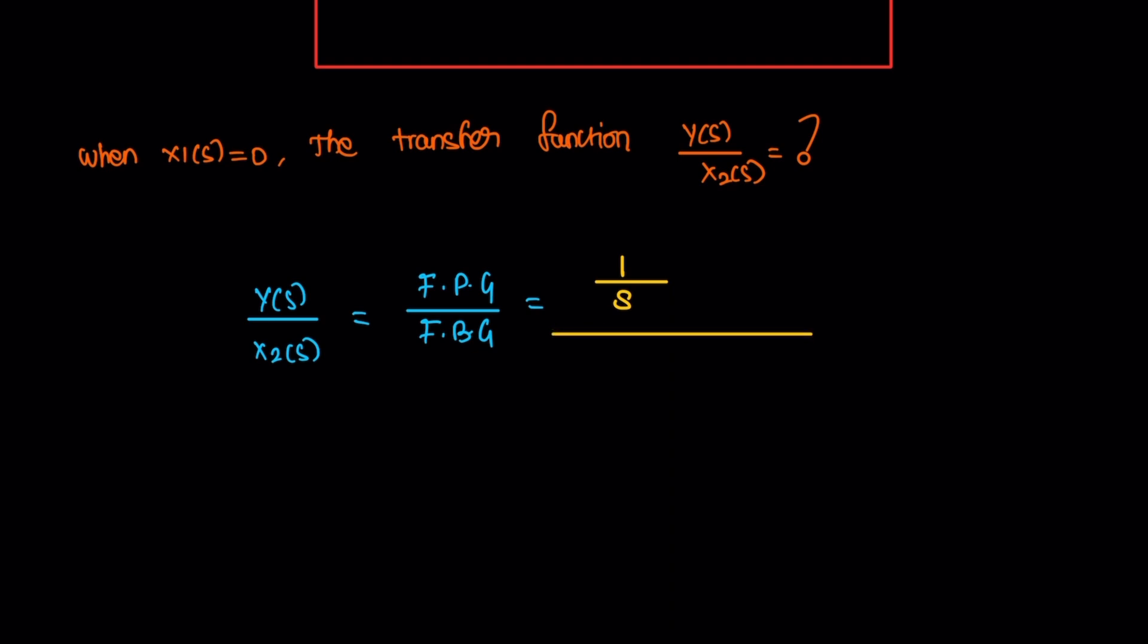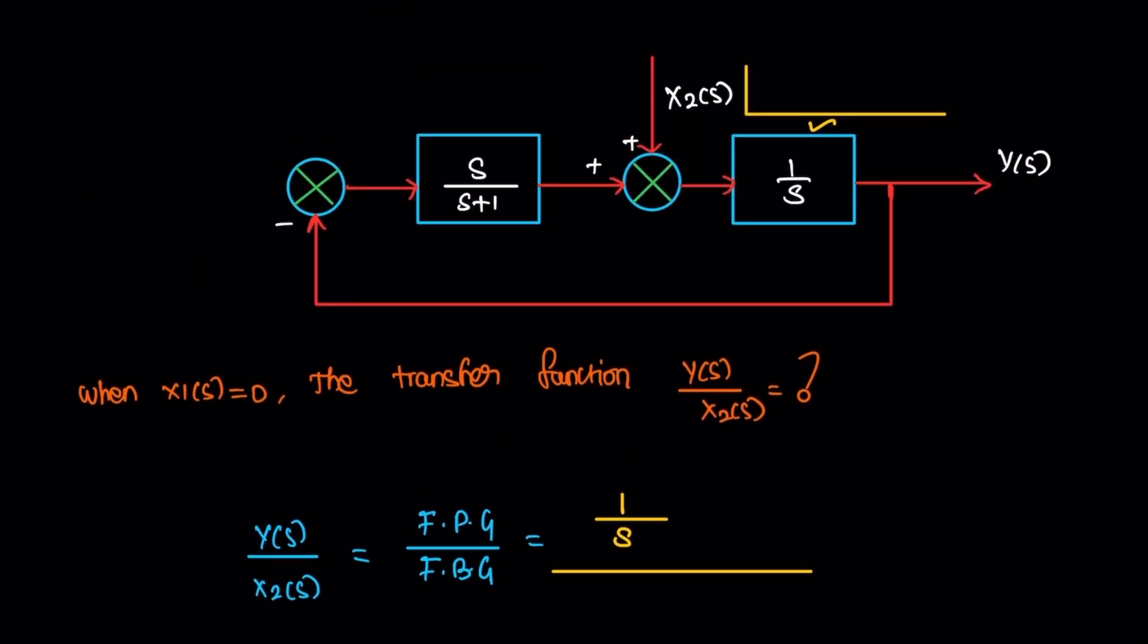Then divided by feedback. So the input, then moving this way. And the key point, it's a negative feedback. So the result is positive.